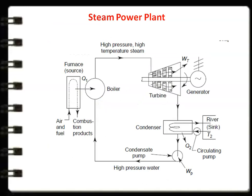Now we will discuss the vapor power cycle or the steam power cycle. First, let us look at the layout of the steam power plant. Take a few seconds and look at the steam power plant and its various components. There are various components. First, we will look at the boiler. The boiler is a device where water is converted into steam.